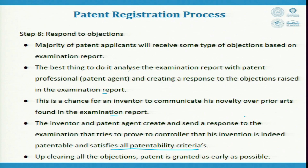Clearing all the objections, the patent is granted at the earliest. Generally it takes a long time — some countries may take 5 years, some 7 years, some 3 years. Design patents happen very fast because there is not much claimed, but a utility patent takes its own time.